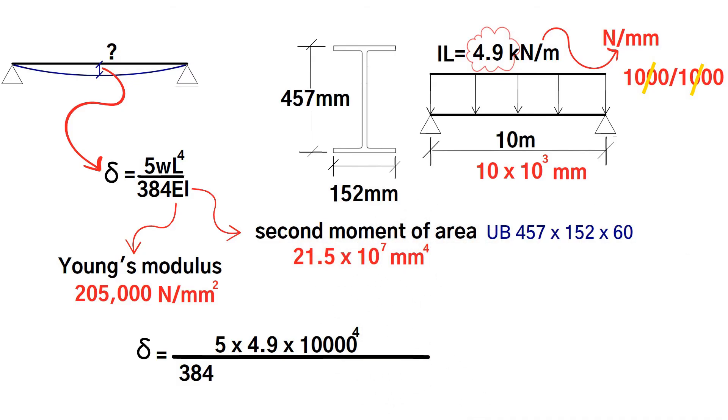Let's work this through. 5 by 4.9 times 10,000 to the 4 divided by. Now we need to put this in brackets when we do a division because all of that is below the line. Divided by open brackets 384 by 205 times 10 to 3, times 21.5 times 10 to 7, close brackets. Equals. The answer is 14.5 millimeters of deflection at mid-span.